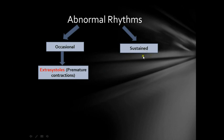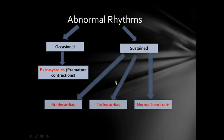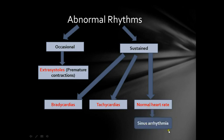For sustained abnormal rhythms, we have three categories: bradycardias, tachycardias, and normal heart rate — which includes sinus arrhythmia, a small category. Each of these will be discussed in a separate video.